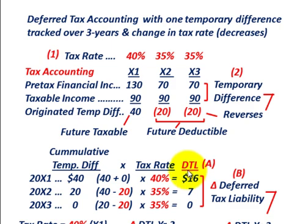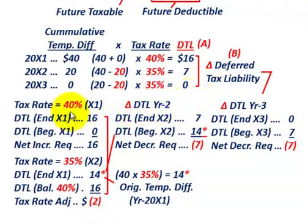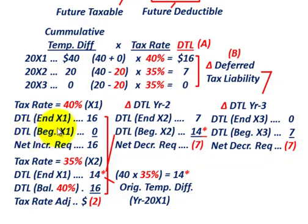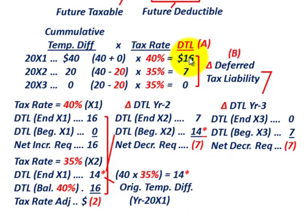The deferred tax liability for year X3 is zero — zero times 35% equals zero. Now we have to look at the change in our deferred tax liability for accounting purposes. This is where we deal with the tax rate change from 40% in year X1 down to 35% in year X2. For year X1 at 40%, our beginning deferred tax liability balance was zero, and at end of year we had $16,000 — so we need a net increase of $16,000.